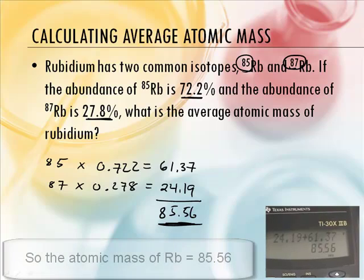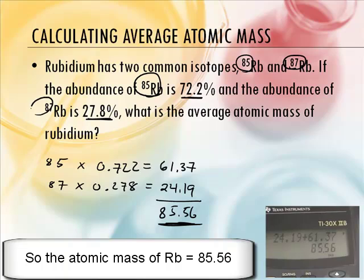Now, does that make sense? Let's look at the masses. The masses are 85 and 87, and we have more of the 85 one. So it should be closer to the 85. And it is. It's higher. So that makes logical sense.